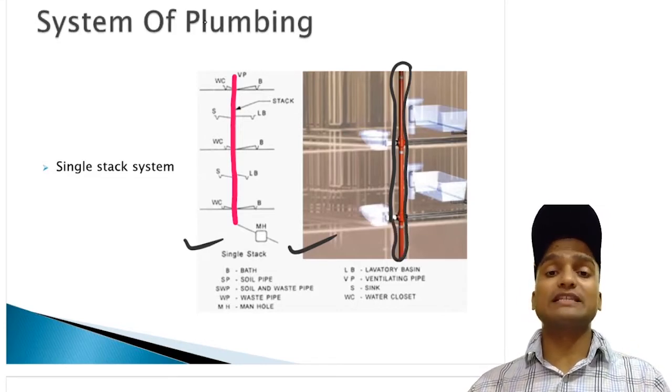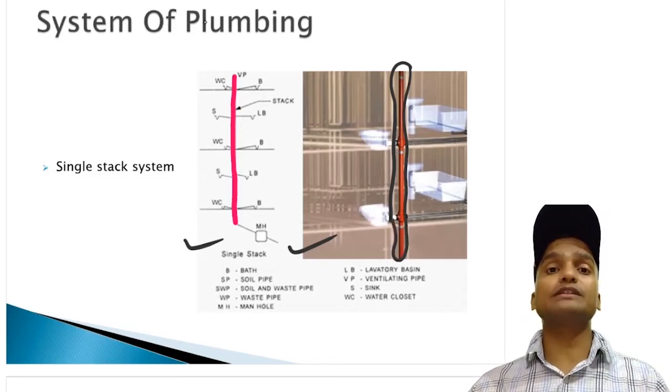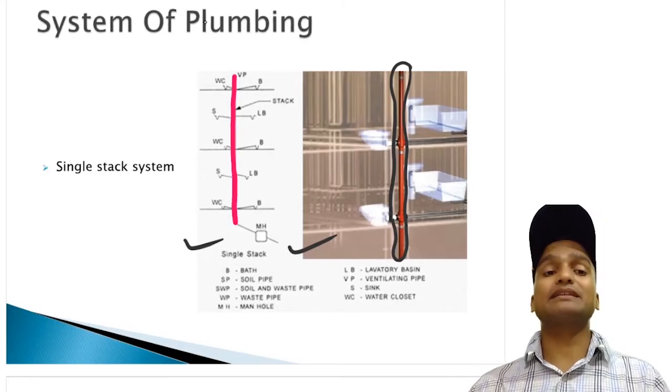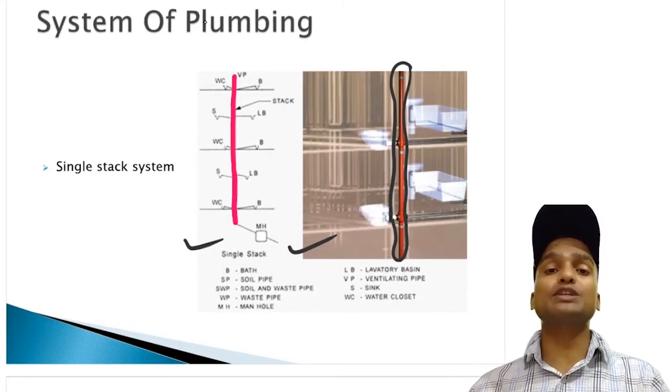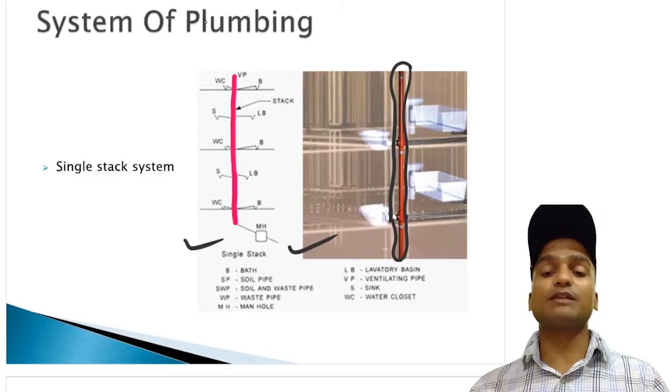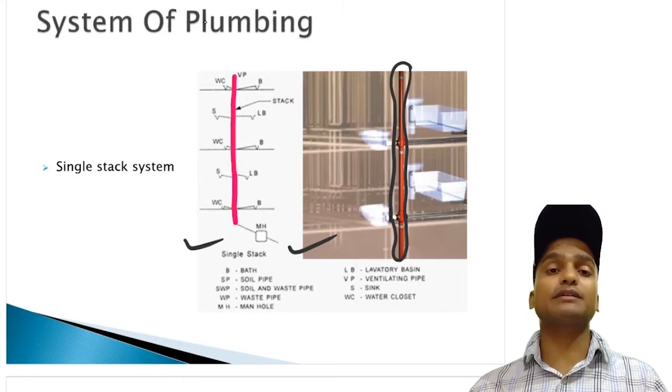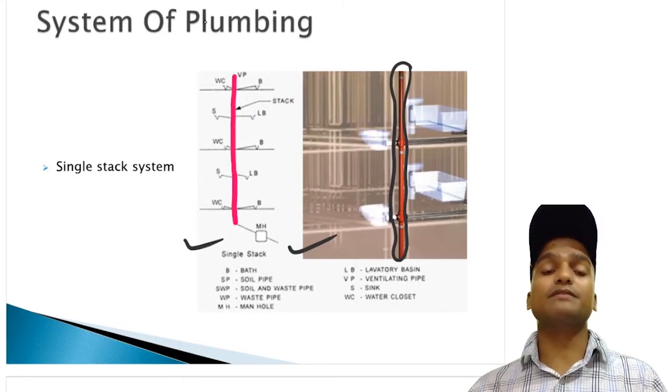Here one vertical pipe is receiving all the discharges as well as acting as ventilating pipe also. Single stack system of plumbing is very economical because it is using only single pipe but the single pipe has got too much load and because of several functions to which it is loaded there are pretty good chances that it can get blocked, damaged or deteriorated very soon.